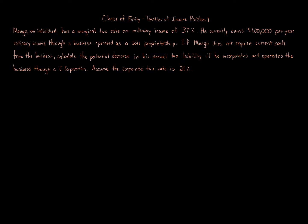Problem one: Mango, an individual, has a marginal tax rate on ordinary income of 37 percent. He currently earns one hundred thousand dollars per year of ordinary income through a business operated as a sole proprietorship. If Mango does not require current cash from the business, calculate the potential decrease in his annual tax liability if he incorporates and operates the business through a C corporation. Assume the corporate tax rate is 21 percent.